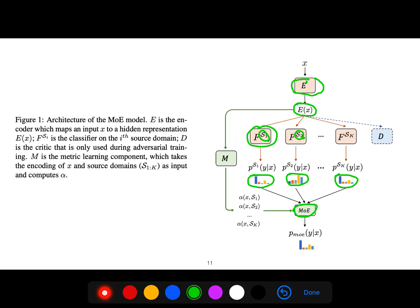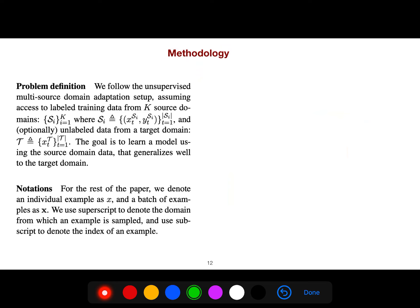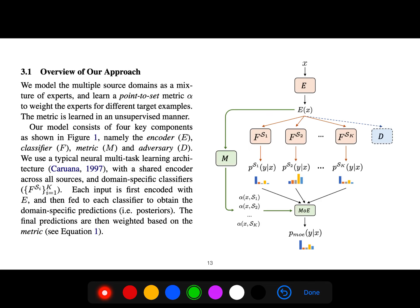But in the framework of mixture of experts we can rely on a mixture of them. M is a metric learning component that we should learn as well, because what is the difference between a point and a domain? So the distance should be learned simultaneously along with these predictions. It's a simultaneous task, a joint task. So we follow the multi-source domain adaptation setup assuming access to labeled training data sets from source domains. We have four components: encoder, this f classifier for different domains, metric, and our adversary here.